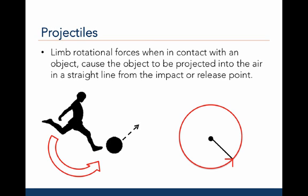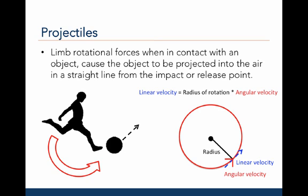To show this another way, on the right I have depicted a circle which has a center point — this could be the joint around which the limb rotates. The black line indicates the radius, which is the distance from the center point to the outside of the circle — this could be the limb length. The red arrow along the circle is the angular velocity. The blue arrow is a linear velocity tangent to the point of contact — a straight line from the point of contact. Depending on the contact or release point around this rotational motion, the object being projected will move in a straight line from that point.